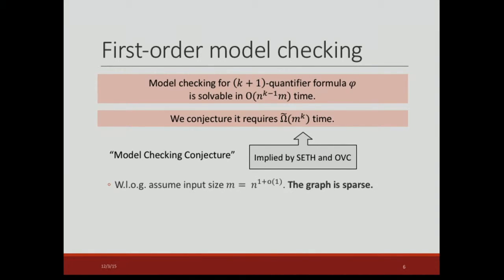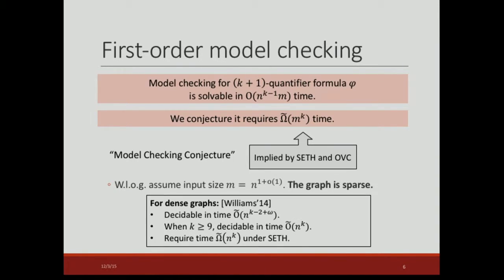Without loss of generality, we can assume the input size — the number of edges — is near-linear in the number of nodes, because otherwise we can just use the simple algorithm above. So we can always assume the graph is sparse. For dense graphs, Ryan Williams showed it is decidable in time n to the k minus two plus omega, where omega is the matrix multiplication exponent. When k is at least nine, it is decidable in time n to the k, and under strong ETH it requires time m to the k, so this bound is tight when k is at least nine.